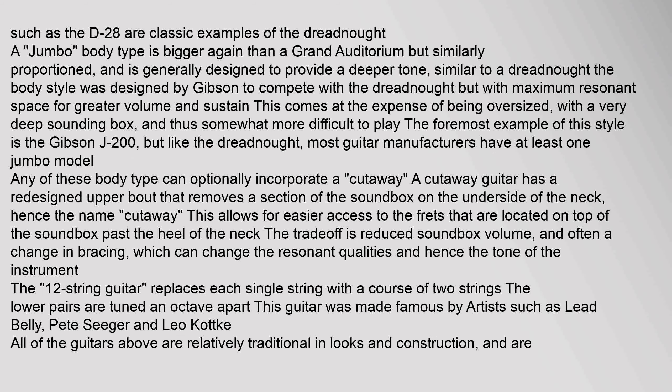Martin's D28 series are classic examples of the Dreadnought. The Jumbo body type is bigger again than a Grand Auditorium but similarly proportioned, and is generally designed to provide a deeper tone similar to a Dreadnought. The body style was designed by Gibson to compete with the Dreadnought but with maximum resonant space for greater volume and sustain. This comes at the expense of being oversized with a very deep sounding box, and thus somewhat more difficult to play. The foremost example is the Gibson J200, but most guitar manufacturers have at least one jumbo model.